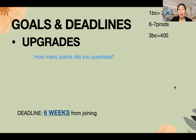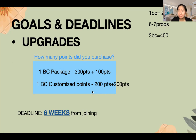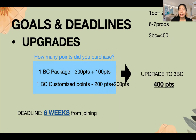Next is upgrades. This applies to those who only got one business center. For one BC, the minimum is 200 points — customize — ranging from 18,000 to 20,000 pesos, usually six to seven products. To upgrade to three business centers, you need to accumulate 400 points. So if you have a 300-point package, just add 100 more points. If you have a 200-point customize, add another 200 points to reach 400 — the minimum for three business centers.